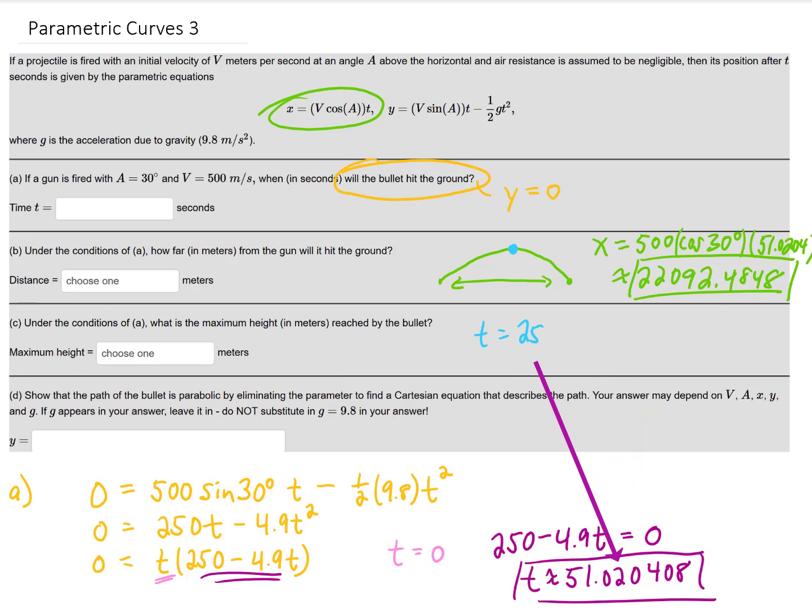The time that we're looking for is 25.5 and so on. That is when the bullet hits its maximum height. If we want to actually find the maximum height we're going to have to plug that time in to find y. So I think that I can squeeze that in down here. Plugging all of that into my calculator is giving me an answer of 3,188.7755 meters.